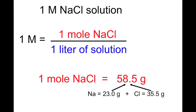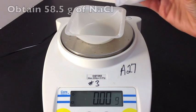So we have to make a one molar NaCl solution. Now one molar means we're going to put one mole of NaCl in one liter of solution. And if we do the math, one mole is 58.5 grams.